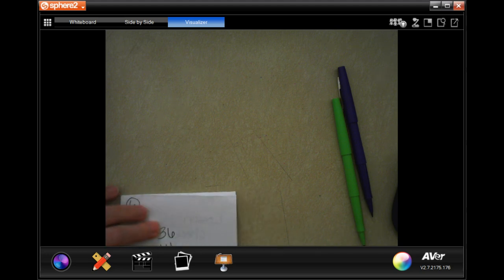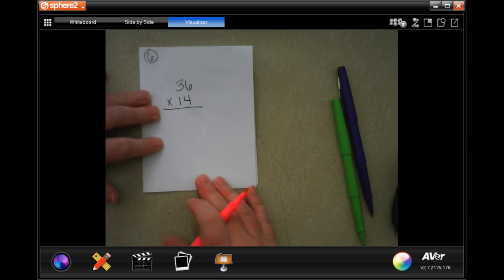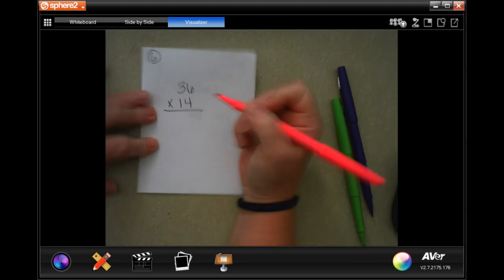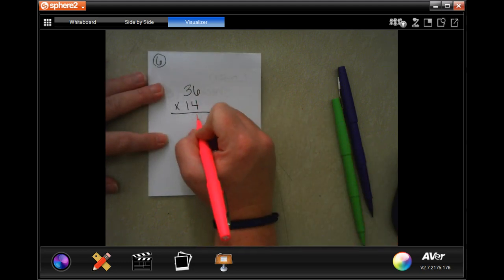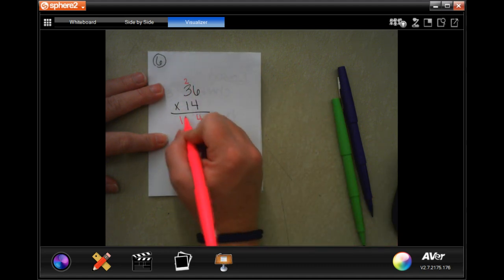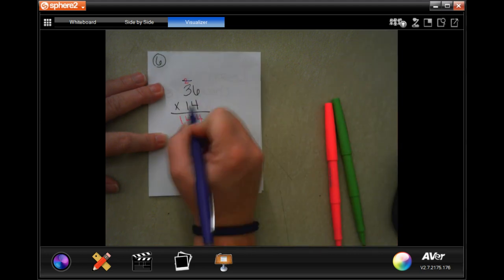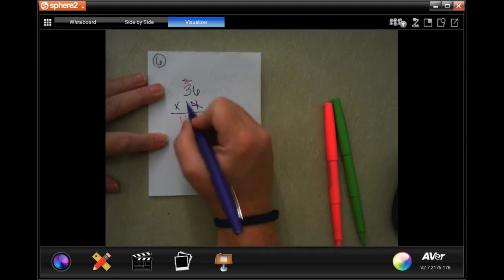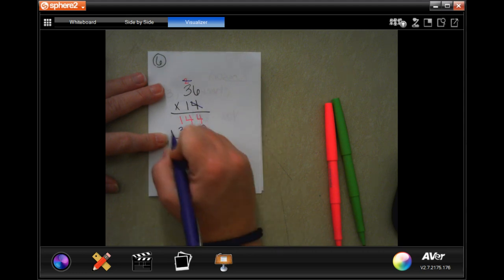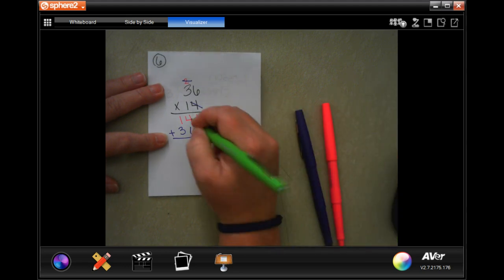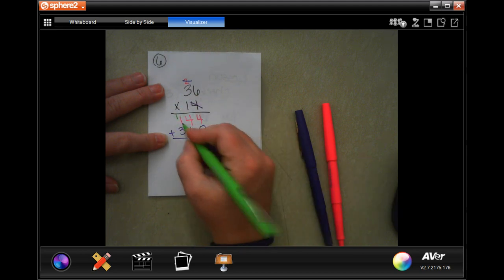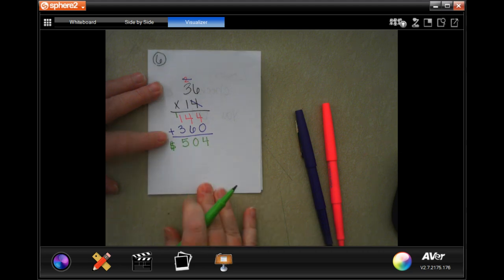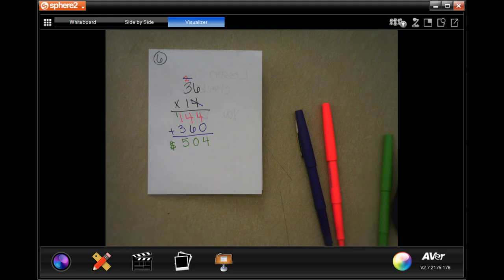All right, guys. Last one. Isabella sells 36 tickets in the School Talent Show. Each ticket costs $14. How much money does Isabella collect for the tickets she sells? So 36 tickets, $14 each, will show how much money she made for the school. 4 times 6 is 24. 4 down, carry your 2. 4 times 3 is 12, plus 2 more is 14. Tick, tack, toe. Don't want to use it, don't want to use it, need a placeholder. And then 1 times 36, I'm going to go ahead and write that 36. We're going to add those up. 4 plus 0 is 4. 4 plus 6 is 10, carry your 1. 1 plus 1 is 2, plus 3 is 5. Don't forget, your dollar sign is your label for that one. All right, guys. That was 2.3. Come on back for 2.4.